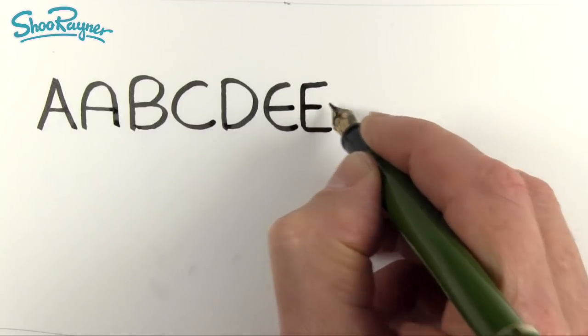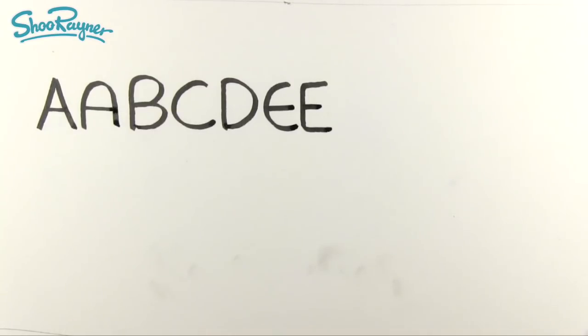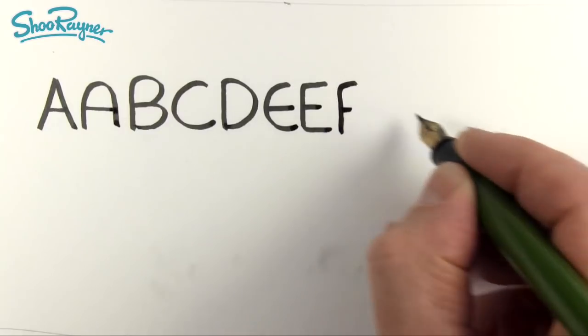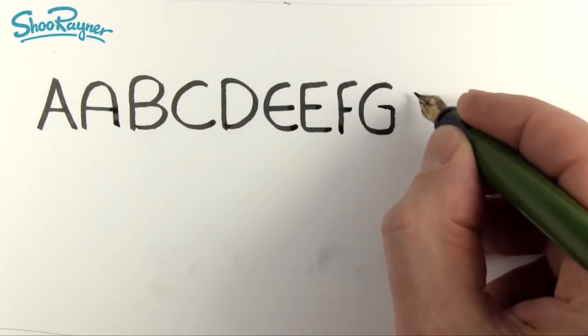It's all a very smooth movement, which is what we are after. Same again for the F, we can come down like that. G, we can come around and up and flick.